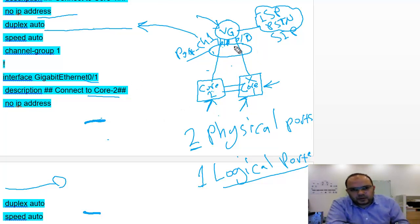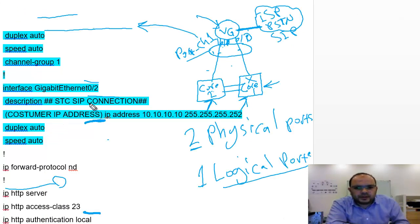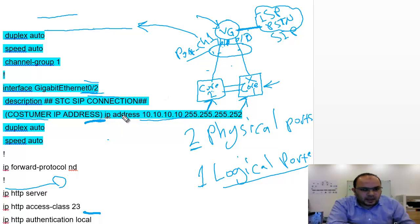There is still one more interface. This one is coming directly from the ISP. In our configuration, this is gig 0/2. This gig 0/2 is the SIP connection. I'll give it the IP address 10.10.10.10. If you remember the first video, we said that the service provider gives you the customer IP address, their next-hop IP address, and the SIP server IP address. So this IP address, 10.10.10.10, is the customer IP address provided by the service provider.